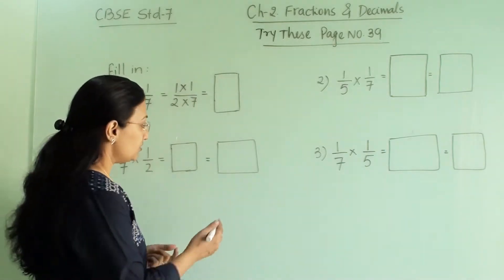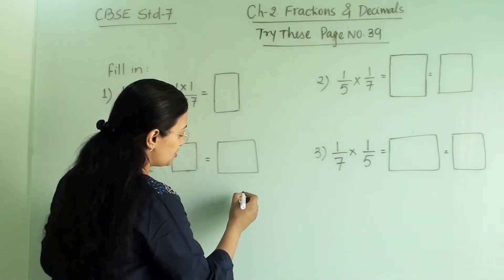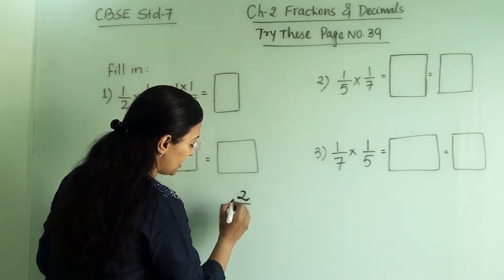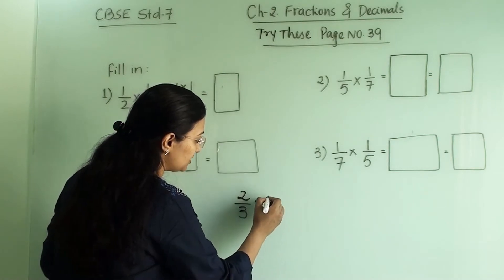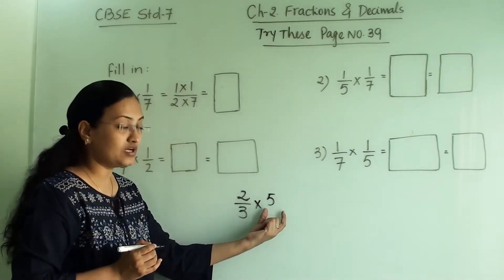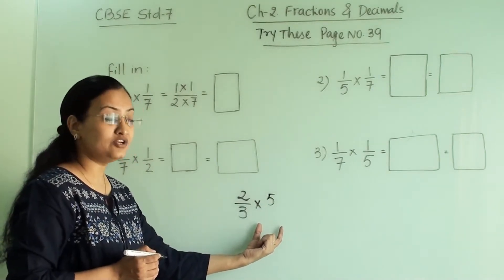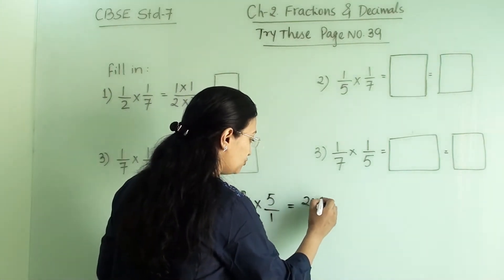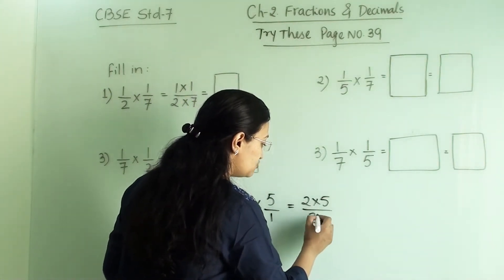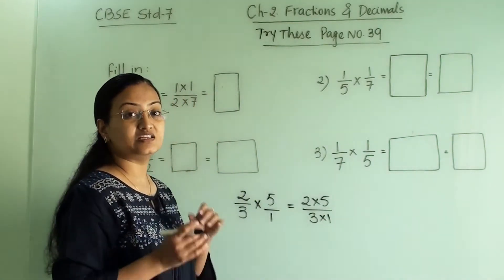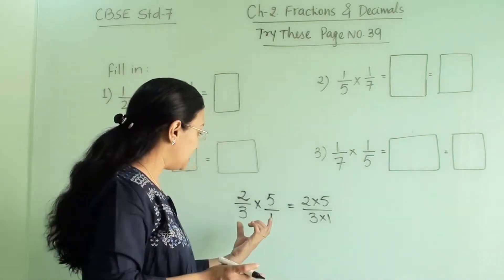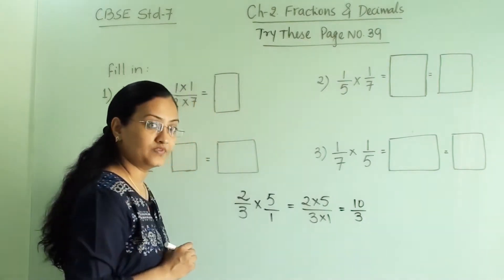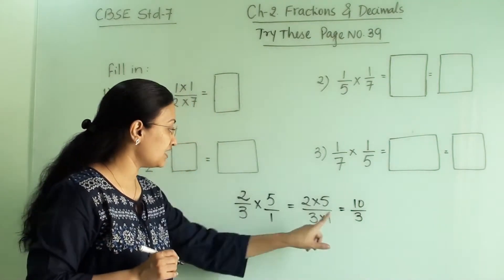Let us recall some of the rules of multiplication. For example, if I have 2/3 and I am multiplying with 5, then 5 is only in the numerator and we do not have anything in the denominator. We can assume that the denominator is 1, and we multiply like 2 into 5 and 3 into 1. When it is multiplication, we do not need LCM — we can directly multiply. So we will get 10/3 as the answer.